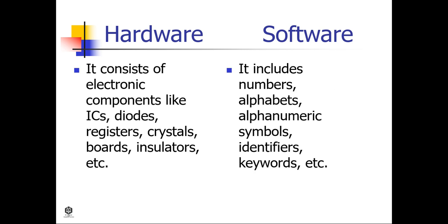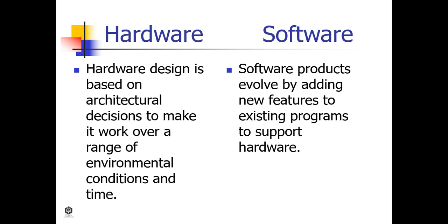Hardware consists of electronic components like ICs, diodes, registers, crystals, boards, insulators, and so on, while software includes numbers, alphabets, alphanumeric symbols, identifiers, keywords, and so on. Hardware design is based on architectural decisions to make it work over a range of environmental conditions and time, while software products evolve by adding new features to existing programs to support hardware.